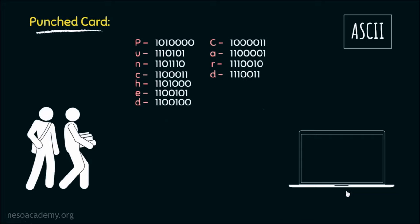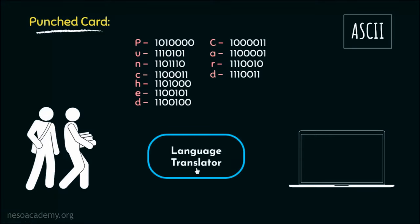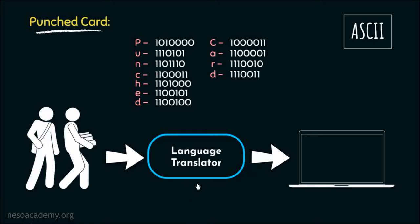Think about the situation carefully. At one hand, we have a machine that has immense potential — we can employ it to solve many of our problems. But on the other hand, we are facing an awful lot of trouble while communicating with it. So what is the solution? Since we are facing a communication barrier, we need a language translator. We will say punch cards to the middleman, that is the language translator, and it will convert that into strings of ones and zeros.